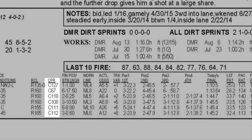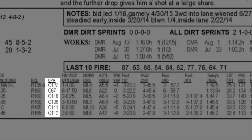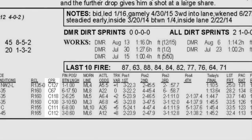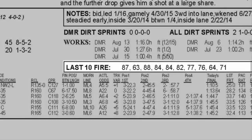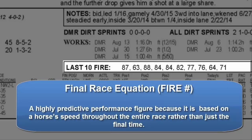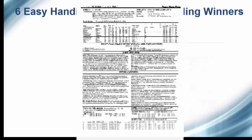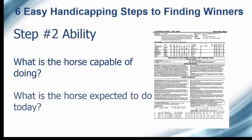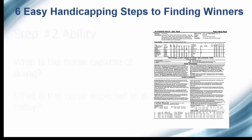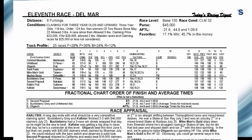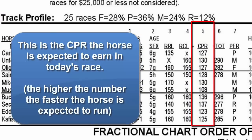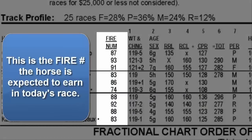To see how the horse performed in his last six races, you can find the CPR the horse earned in each race in the horse's data lines under the CPR heading. To see how the horse performed in its last ten races, the final race equation or fire number for up to the horse's last ten starts are listed in the horse's data lines next to the heading Last Ten Fire. Just like the CPR, the higher the number, the faster the horse. To determine what the horse is expected to do today, look in the header in column 5, where you will find the CPR the horse is expected to earn in today's race. You can also find the fire number the horse is expected to earn in today's race in the Fire Num column in the race header.